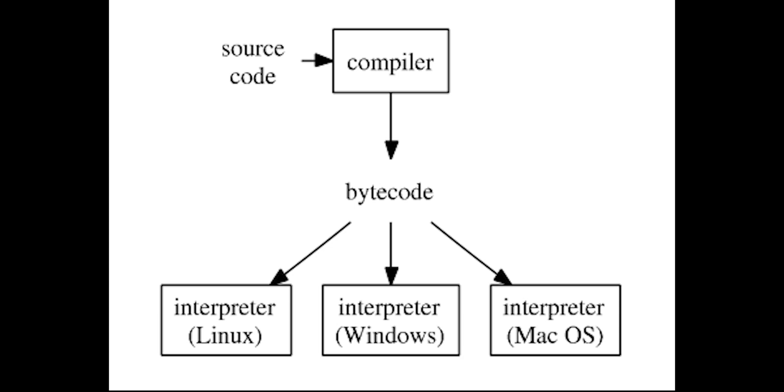Before we wrap up, there are two important things to cover. The first is the concept of a hybrid language, which tries to take the best of both worlds — the speed of a compiled language but the portability of interpreted languages. Initially, it takes your source code and compiles it into an intermediate representation, often called an intermediate language or bytecode. Then the machine running your code takes it from that bytecode to machine language.